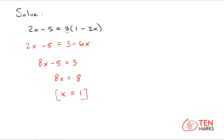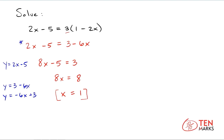What we're going to do here is look at this step and write two separate linear equations as we've done in the past. So the first equation from the left side is y equals 2x minus 5. And the equation from the right side is y equals 3 minus 6x, and you can rearrange this as y equals negative 6x plus 3. And let's see these two lines on a graph.